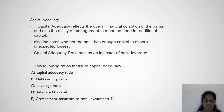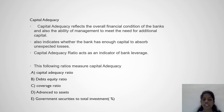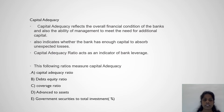Capital Adequacy reflects the overall financial condition of the bank and the ability of management to meet the need for additional capital. It also indicates whether the bank has enough capital to absorb unexpected losses. Capital Adequacy ratios act as an indicator of bank leverage. The following ratios measure capital adequacy: Capital Adequacy ratio, Debt Equity ratio, Coverage ratio, Advance to Assets, and Government Securities to Total Investment.